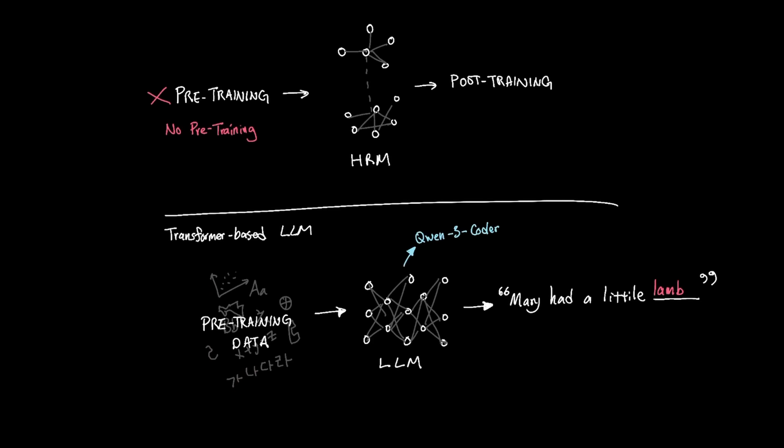For reference, Qwen 3 Coder, which is a 480 billion parameter model, was trained with 7.5 trillion tokens during pre-training. And Mikimi K2, which is a trillion parameter model, was trained with 15.5 trillion tokens. Well, in the case of HRM, it had zero.